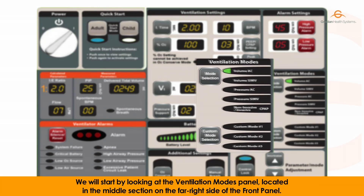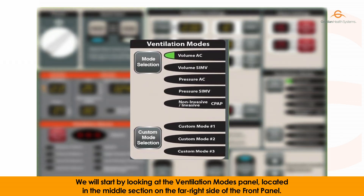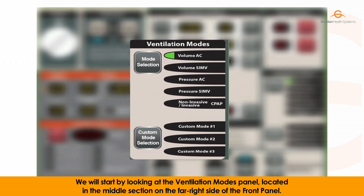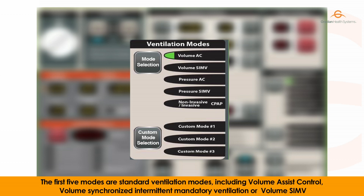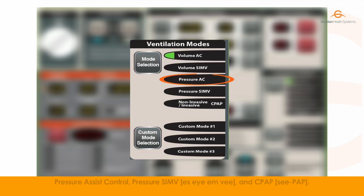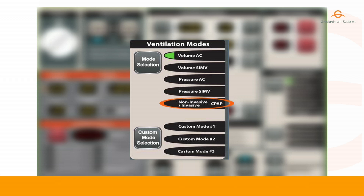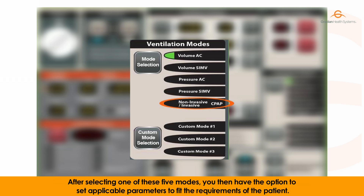We will start by looking at the ventilation modes panel, located in the middle section on the far right side of the front panel. Here you will find the options for ventilation modes. The first five modes are standard ventilation modes, including Volume Assist Control, Volume SIMV, Pressure Assist Control, Pressure SIMV, and CPAP. After selecting one of these five modes, you then have the option to set applicable parameters to fit the requirements of the patient.